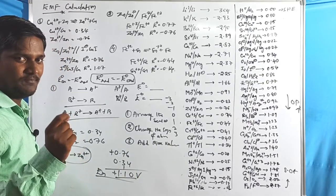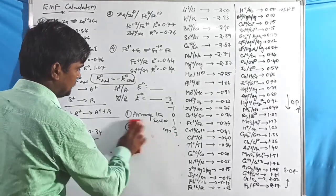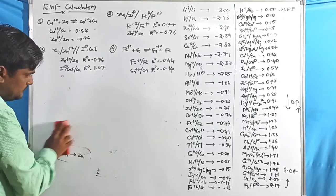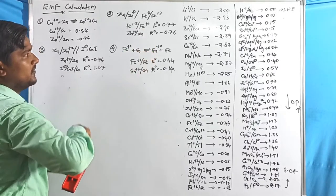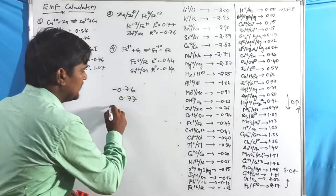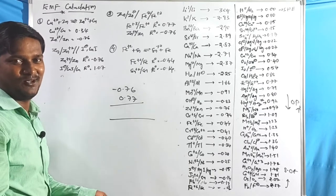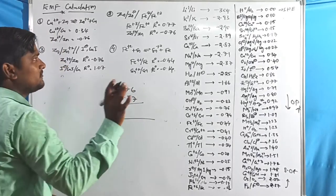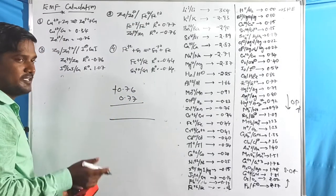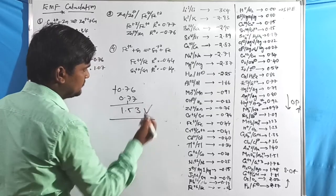Problem 2: values given are −0.76 and +0.77. Negative is top (anode), positive is bottom (cathode). Change the sign of the above one: −0.76 becomes +0.76. Adding: 0.76 + 0.77 = 1.53 volts. You can solve these problems in about 10 seconds using these three points — it is quite straightforward.